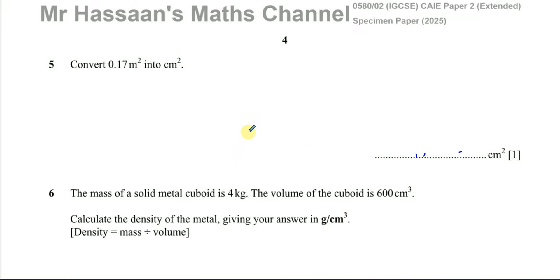Welcome back, this is Mr. Hassan's Maths Channel. I'm now going to answer question number 5 from the paper of the IGCSE's Cambridge paper 2. This is a non-calculator extended paper and here we're told to convert 0.17m² into cm².